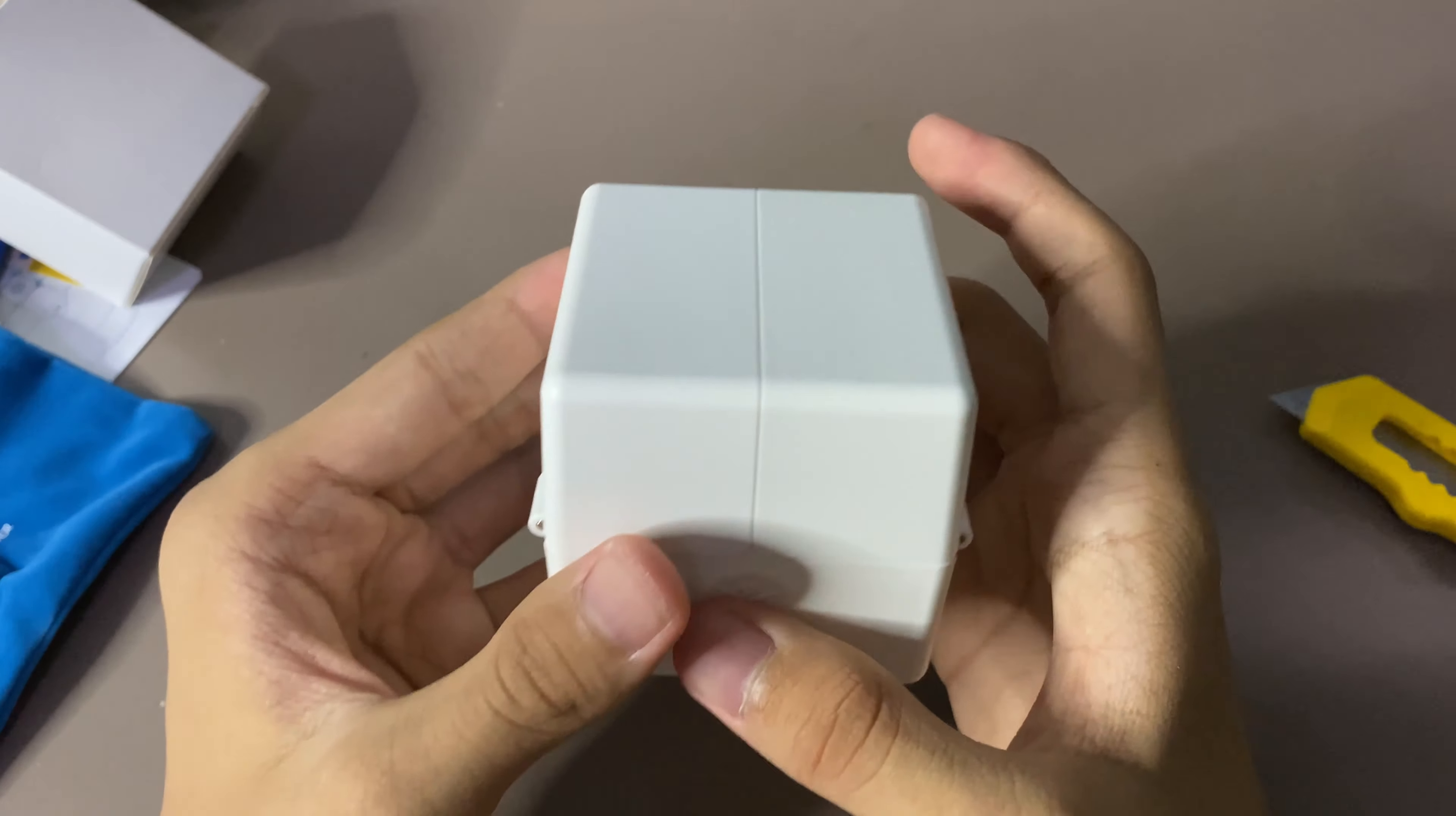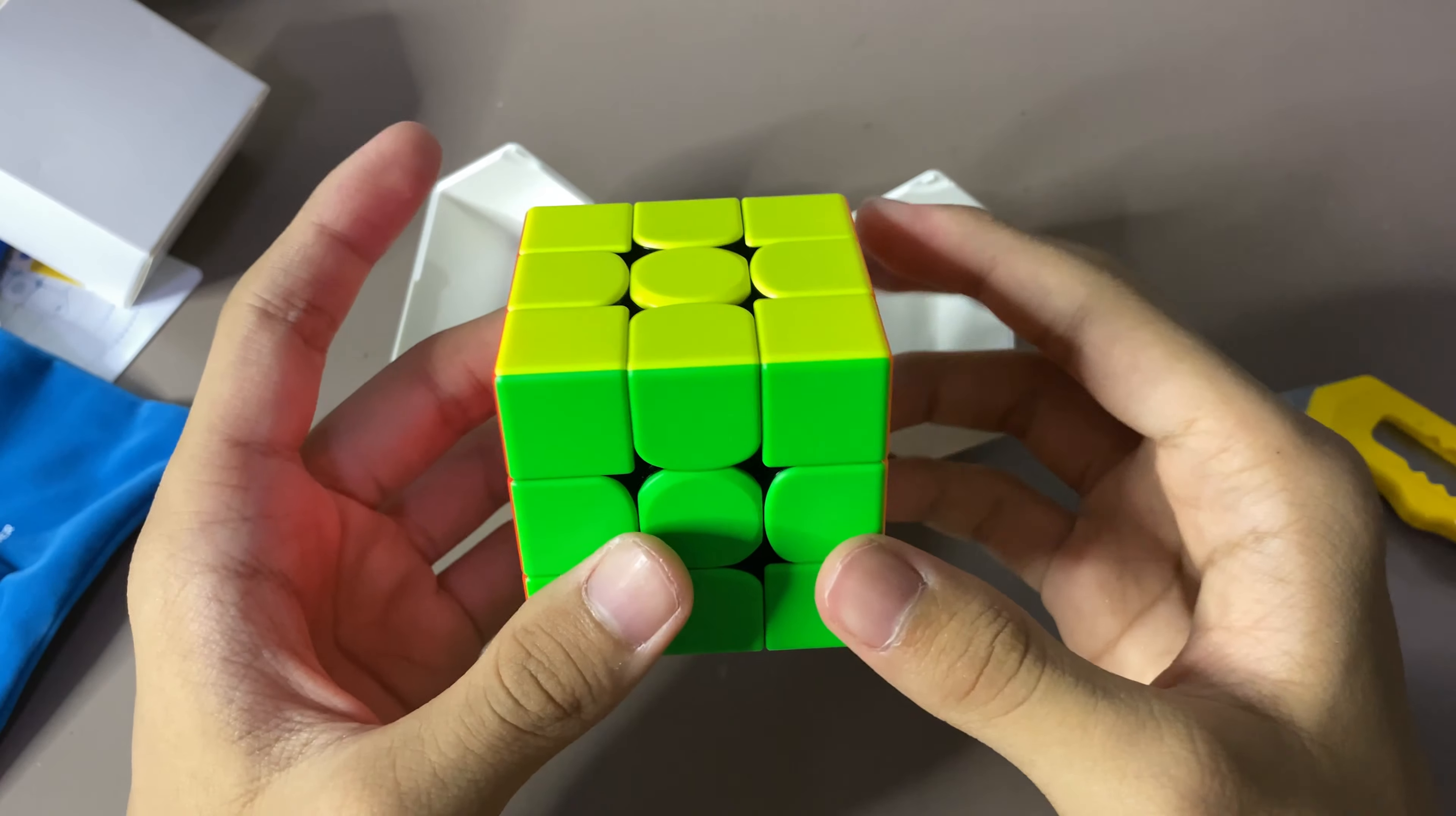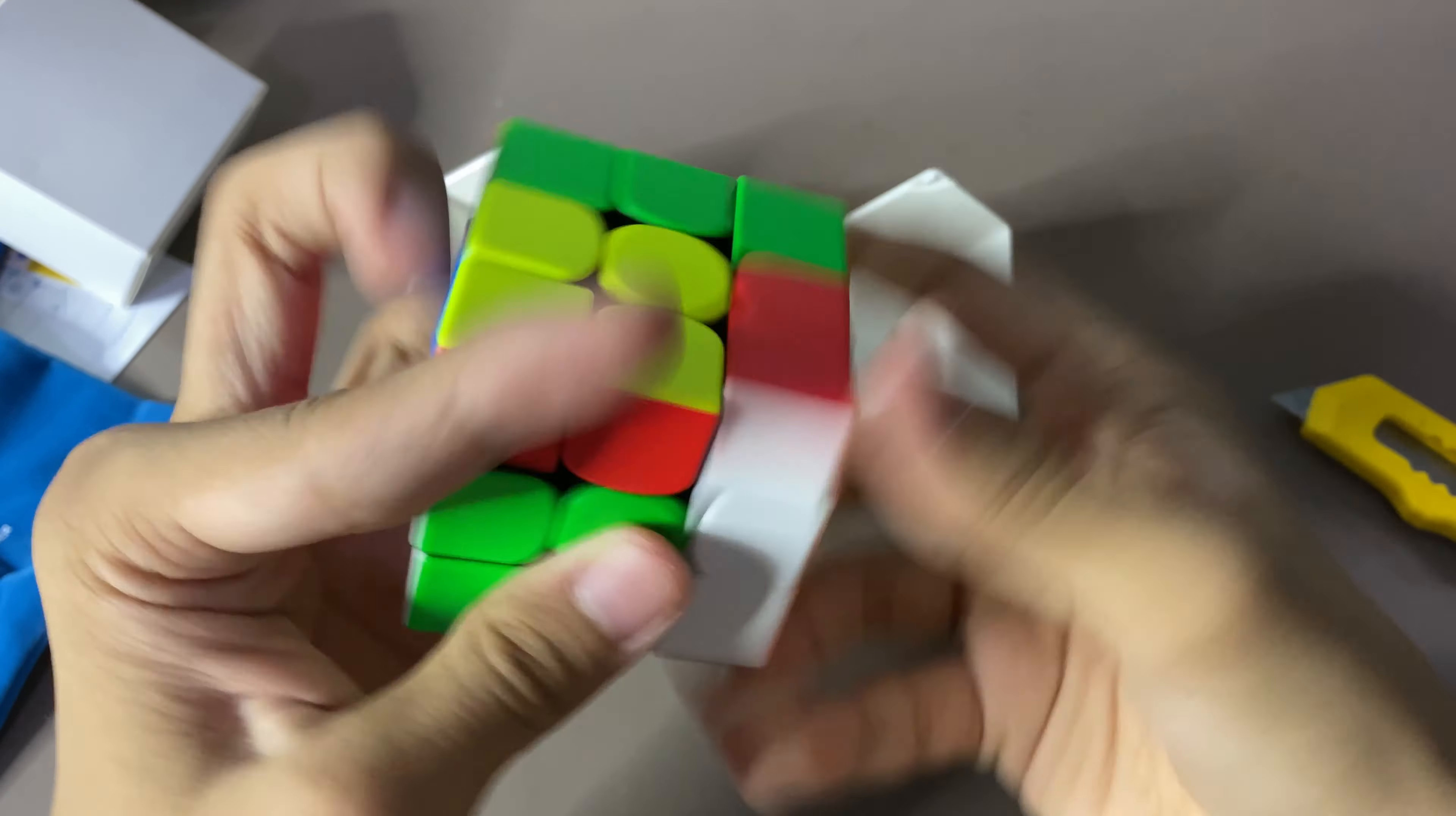And, yes. Finally, the main event. And, I can finally do this. And, there we go. So, this is the cube. And, wow. That's light. Like, this is really, really light. Let's just do some first turns, I guess. Okay. Wow. This is fast. Wow. This is fast.